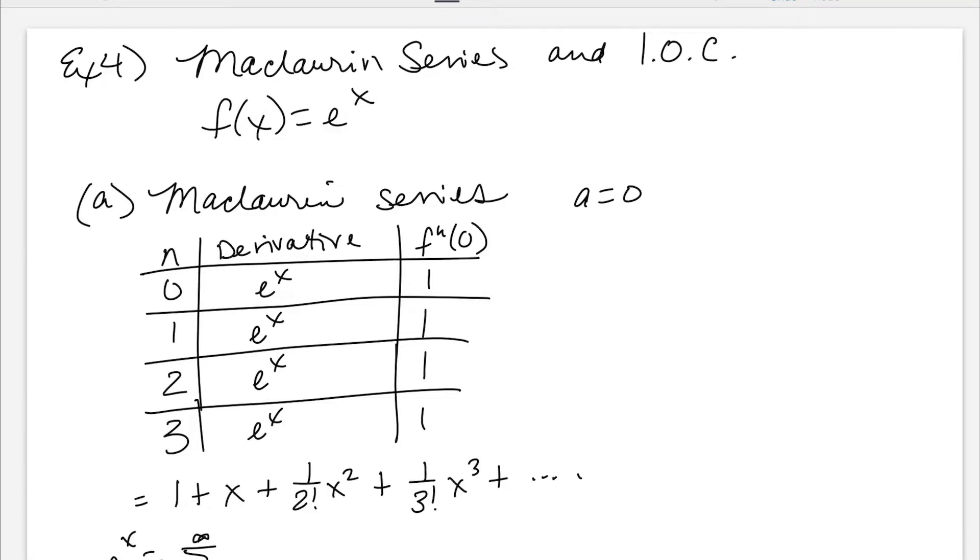My e to the x here is going to be the series from zero to infinity. It's all positive, so that's good. x to the k over k factorial. If I plug in zero here, zero factorial, one factorial, two factorial, three factorial, same thing. x to the zero, first exponent, two, three, nailed it. There's my Maclaurin series.